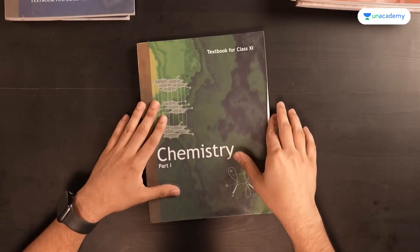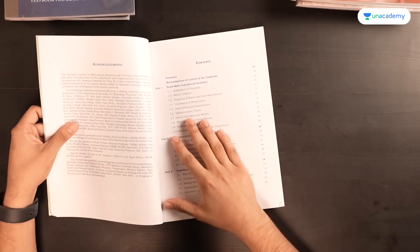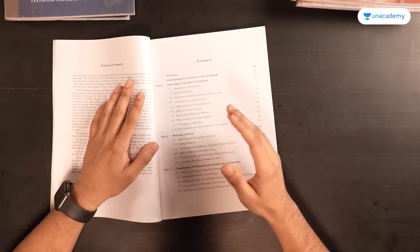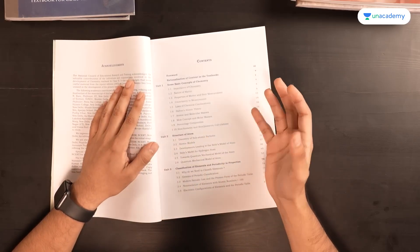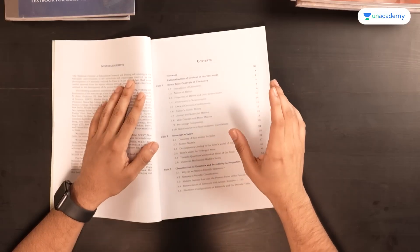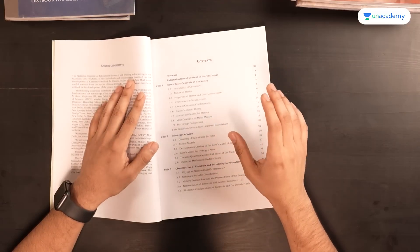If I point at some chapters, like some basic concepts of Chemistry, these are the very basic questions that are always asked from this chapter about moles and all. This is the chapter which you can count on as coming from the numericals. Just go through the NCERT once or twice, make good notes and then revise the theory from the notes only.